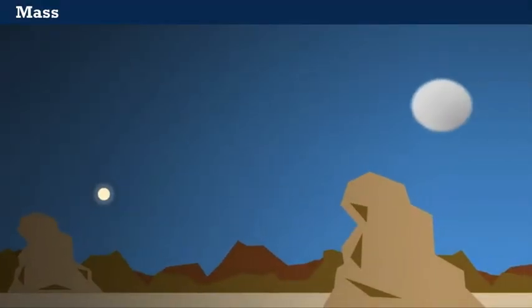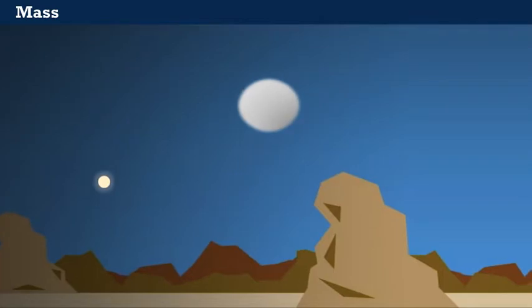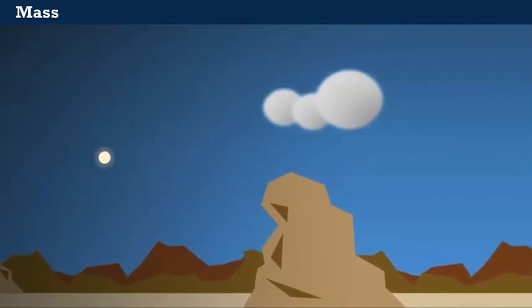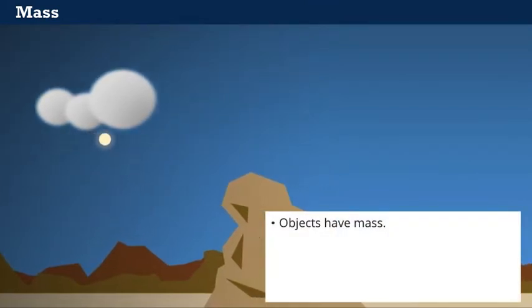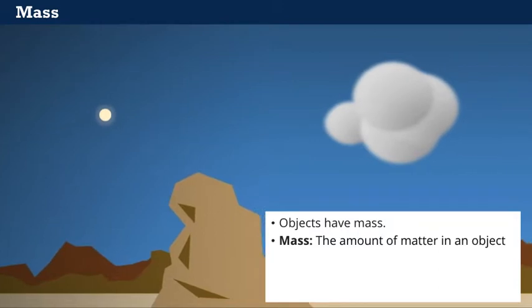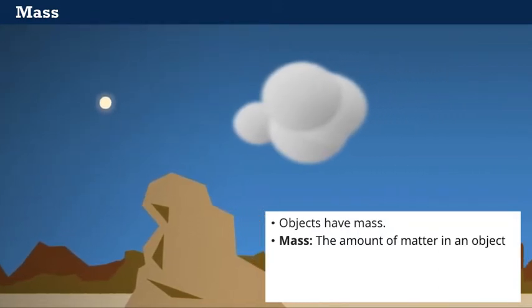Let's begin by discussing mass, because the concept of mass is very important for understanding how gravitational forces act between two objects. Objects have mass. That is, mass is a property of the object, and it can be defined simply as the amount of matter in an object.